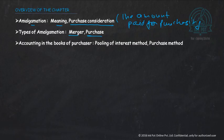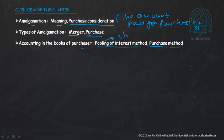After that, we'll see what entries are going to take place in the books of the purchaser. We can follow two methods: number one is the pooling of interest method, and number two is the purchase method. Pooling means sharing of interest, whereas in the purchase method, one company takes over the other company.